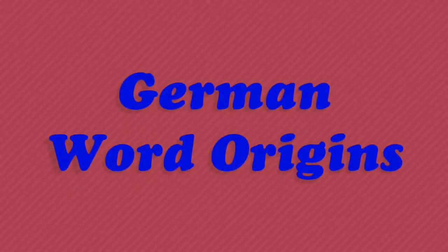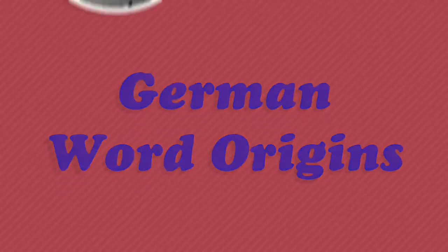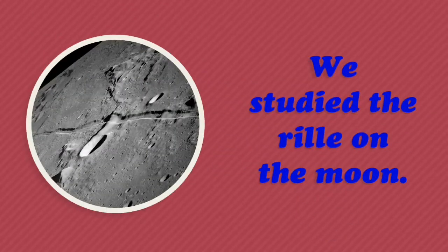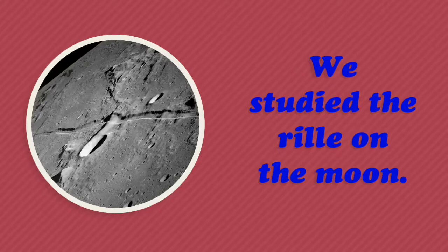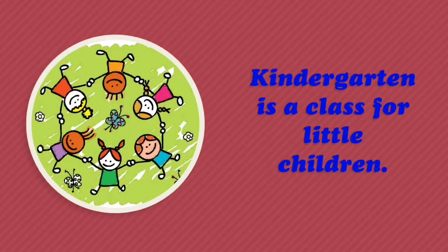German word origins. Rill is your German word. A rill is a long narrow valley on the surface of the moon. We studied the rill on the moon.